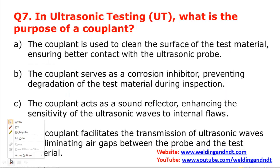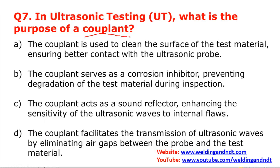Question number seven: in ultrasonic testing, what is the purpose of a couplant? When performing UT, a probe is kept on the surface of the job and some couplant is applied — a liquid like grease, oil, or glycerin. This couplant facilitates the transmission of ultrasonic waves by eliminating air gaps between the probe and the test material. Without couplant, waves emitted from the probe would be lost in the air, so couplant ensures proper transmission from the probe to the surface.